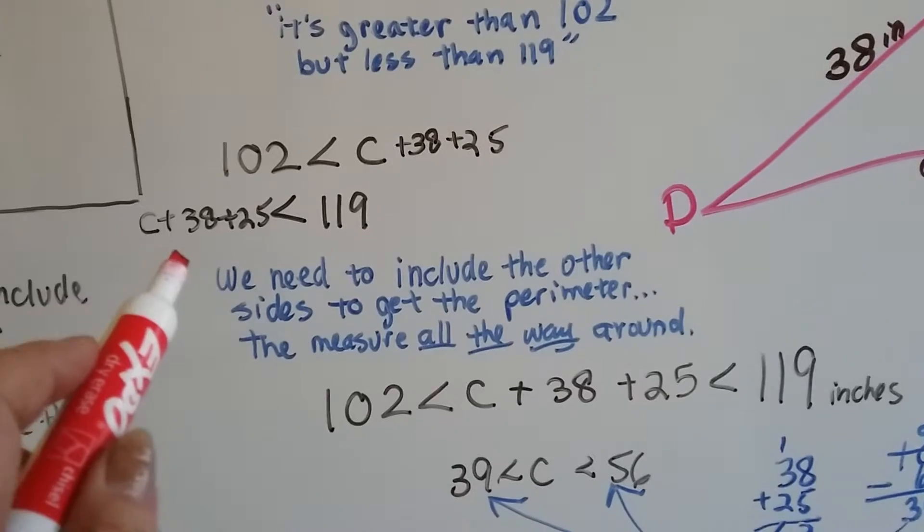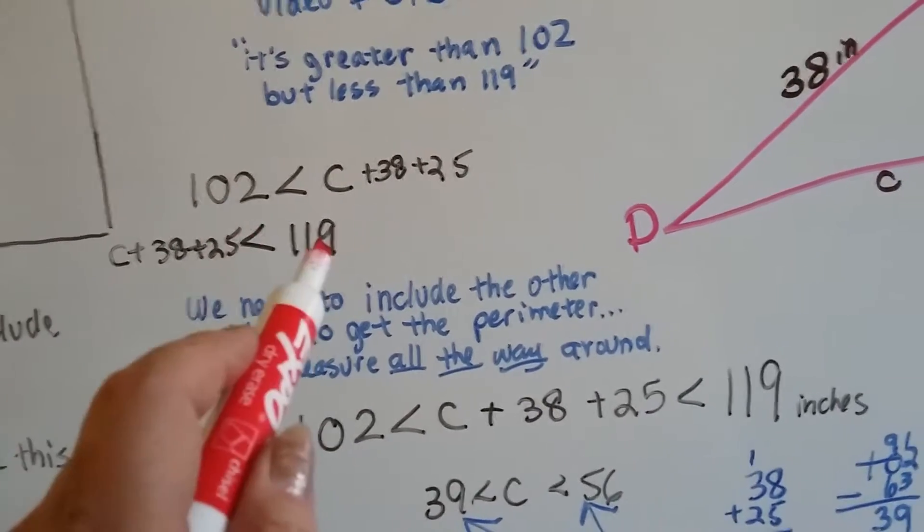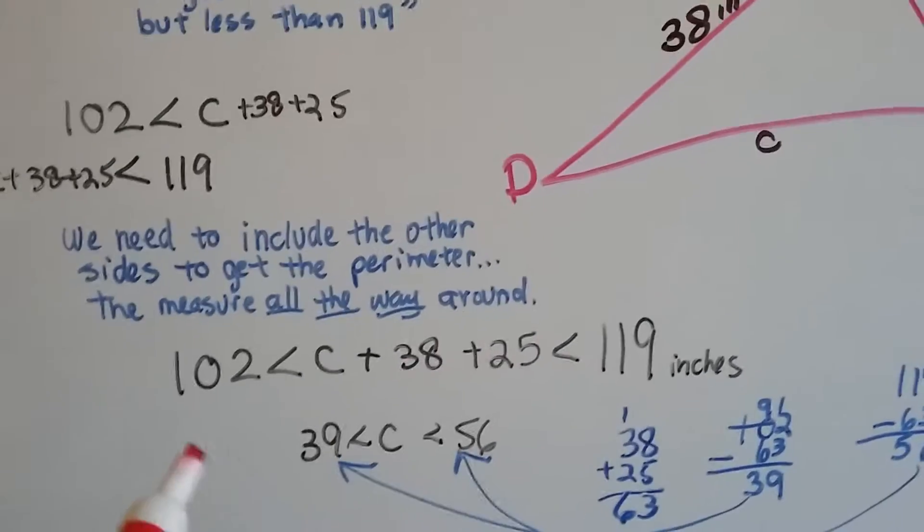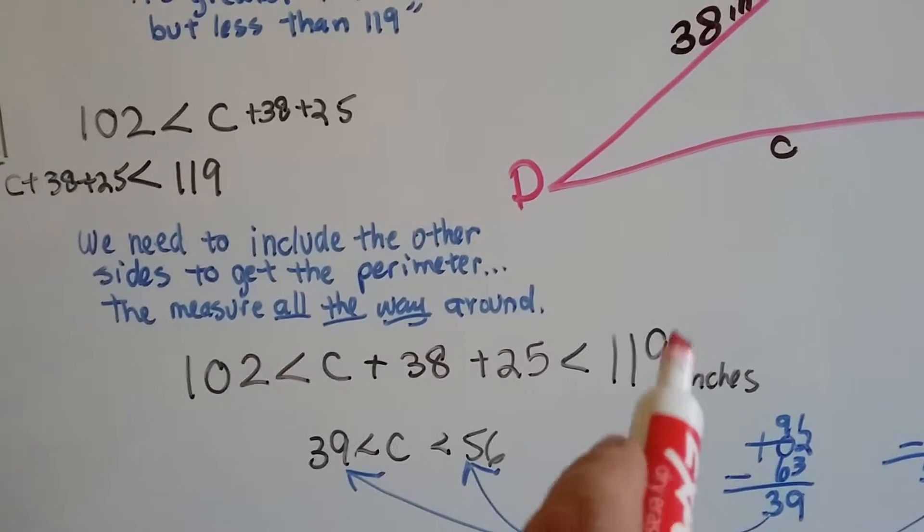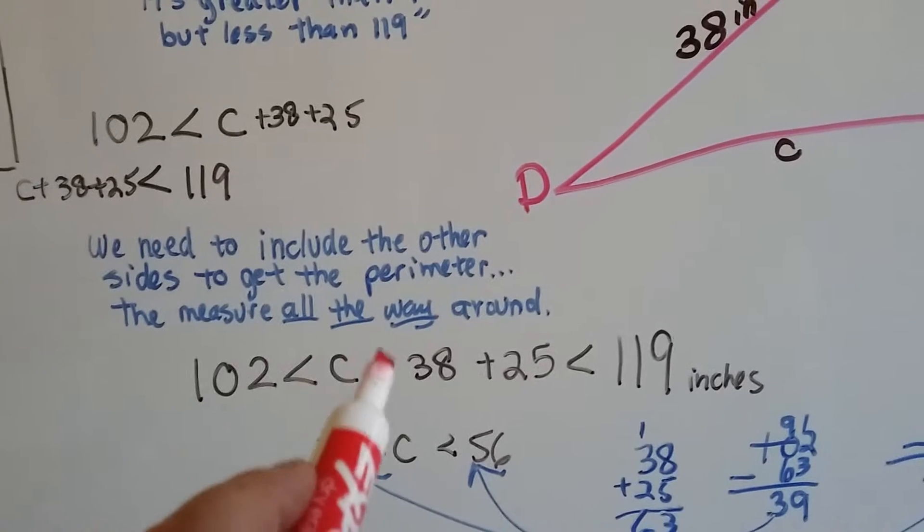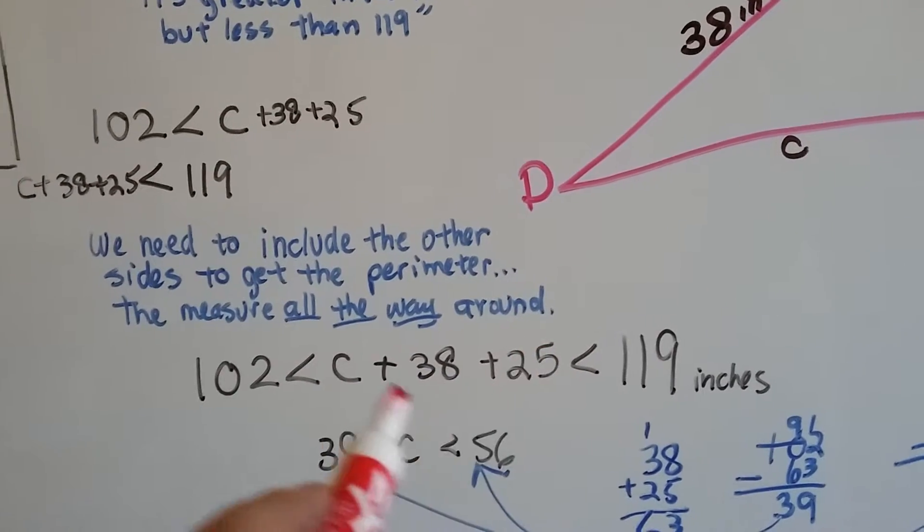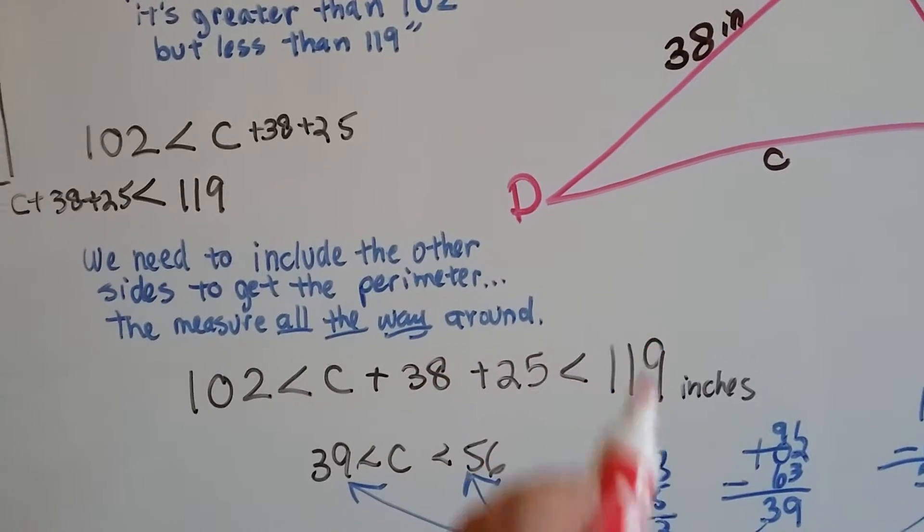And C plus the 38 plus the 25 is less than the 119. So, we can write it as the 102 over here and the 119 over here, and C plus the 38 plus 25 is greater than the 102 and less than the 119.